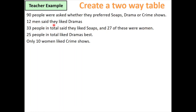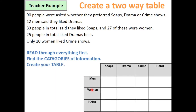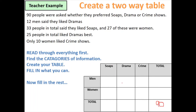I'll sketch out my table with men, women, soaps, drama, and crime. Plugging in the given information: 90 people total; 12 men liked dramas; 33 total liked soaps; 27 of those were women; 25 total liked dramas; 10 women liked crime shows. Everything in red is from the question.